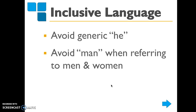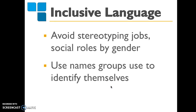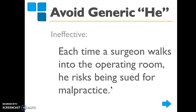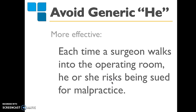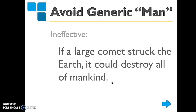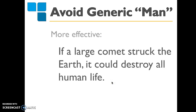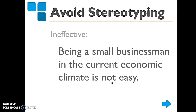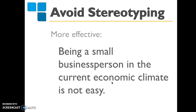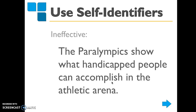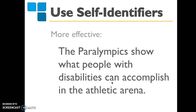The first principle is avoiding the generic 'he' and avoiding 'man' when referencing men and women. The second principle is avoiding 'man' in job titles and using names of groups as they identify themselves. For example: 'Each time a surgeon walks into the room, he risks being sued for malpractice' — more effective is saying 'he or she.' Another example: 'It could destroy all of mankind' — better to say 'destroy all human life.' Also avoid stereotyping: 'a small businessman' should be 'business person.' Additionally, use person-first language: instead of 'handicapped people,' say 'people with disabilities.'